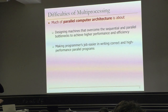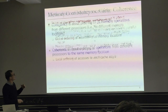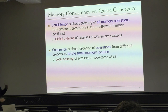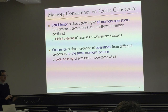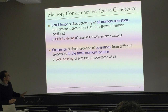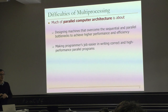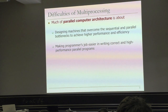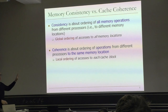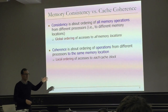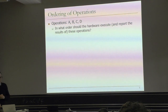Coherence is about a single memory location — if it's cached in multiple caches, how do you keep the value coherent? Whenever one processor updates memory location X, the other processor shouldn't get a stale value because it cached it earlier. That's a local ordering of accesses for each memory address. You want a good memory consistency mechanism and a good cache coherence mechanism that the programmer can rely on. In the end, it's about making the programmer's job easier in writing correct programs.